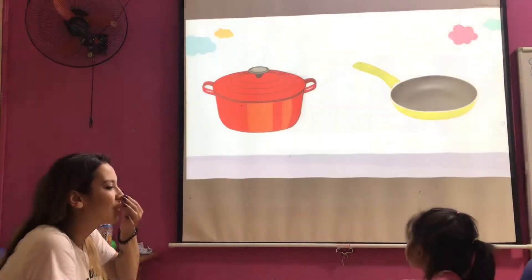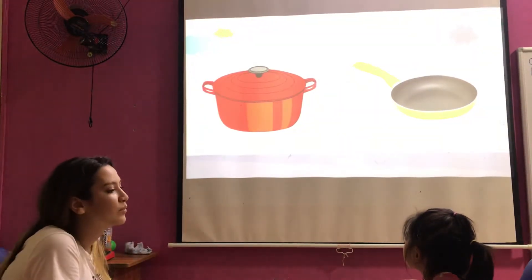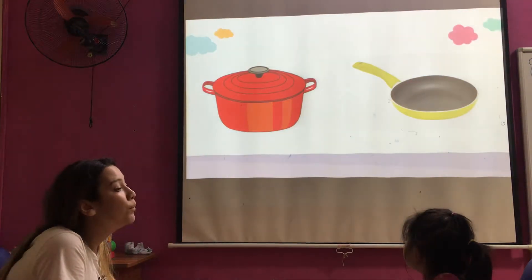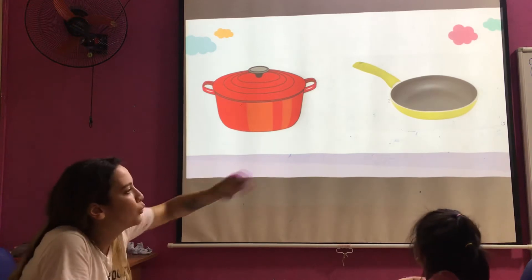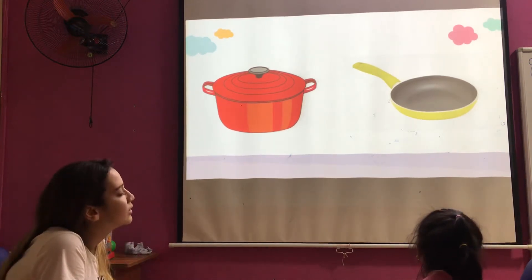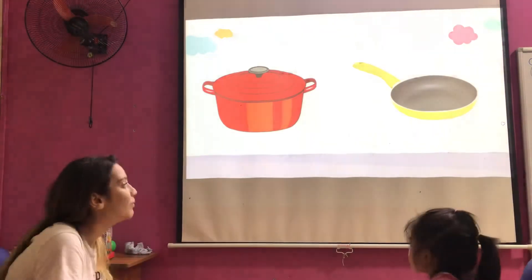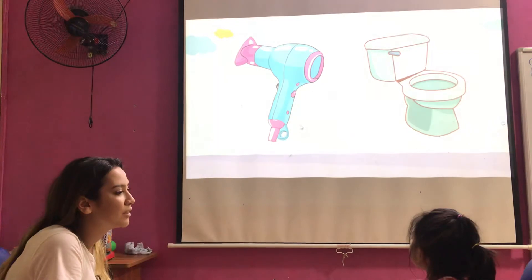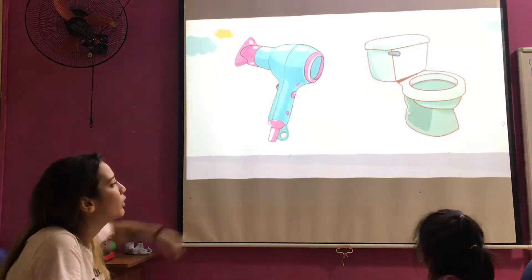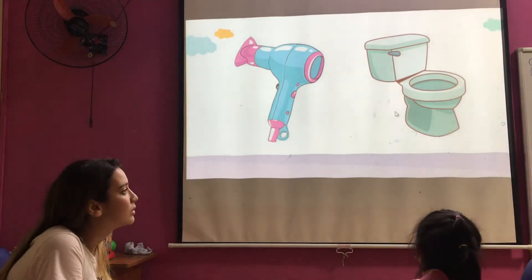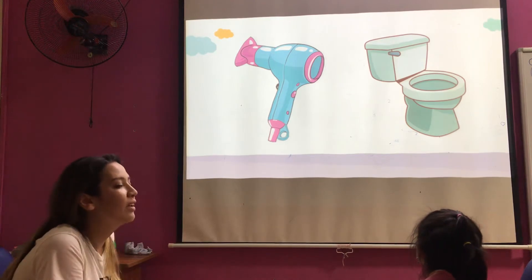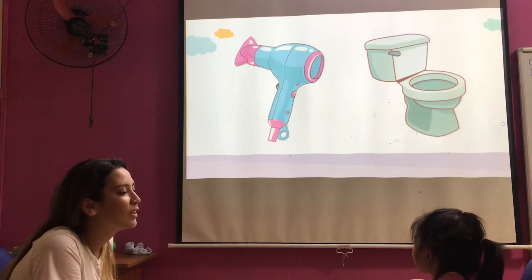Okay, next. What is this? It's a pot. Okay, and this, what is this? Right, yes. Good. Toilet. Okay, what is this? A toilet. Hair dryer, right. And what is this? Toilet. Let's say, it's a toilet. It's a toilet. Okay.